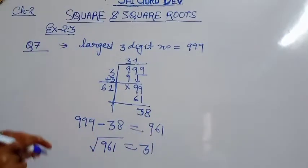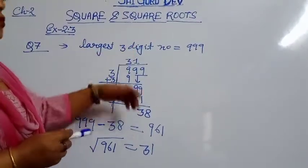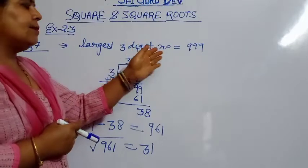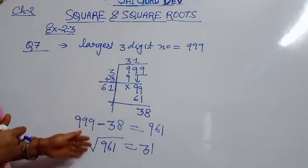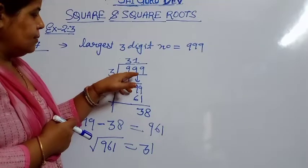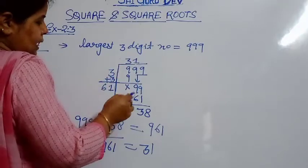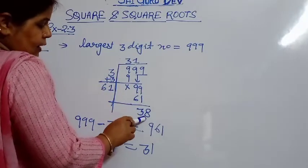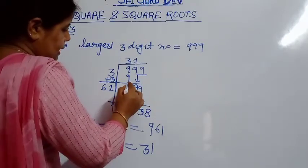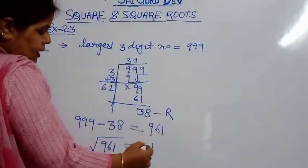Have you understood? In this way you can make many such questions — find the largest 4-digit number which is a perfect square, or the largest 5-digit number. We had 999, found its square root, and whatever the remainder was, we subtracted it from 999 to get our answer.